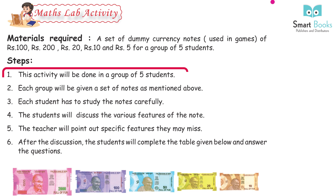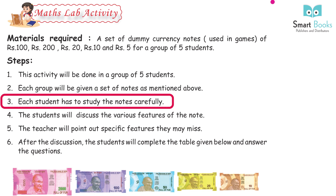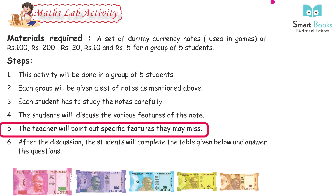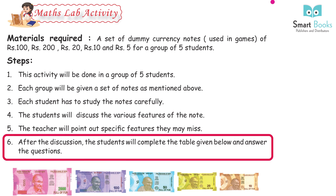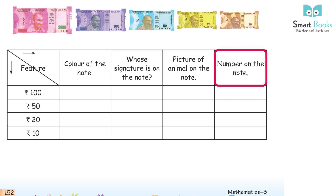Activity: a set of dummy currency notes used in games. Steps: 1. This activity will be done in a group of 5 students. 2. Each group will be given a set of notes. 3. Each student has to study the notes carefully. 4. Students will discuss the various features of the note. 5. The teacher will point out specific features they may miss. 6. After the discussion, students will complete a table with features such as color of the note, whose signature is on the note, picture of animal on the note, and the number on the note.